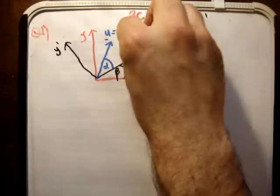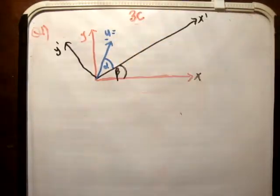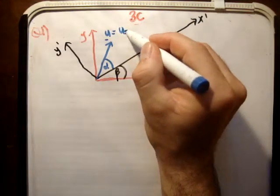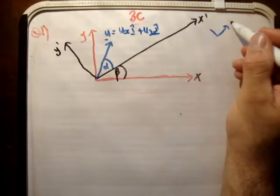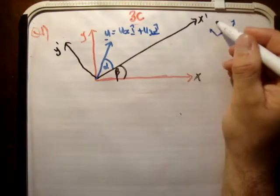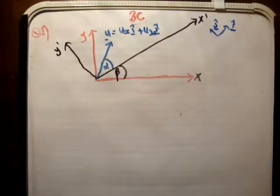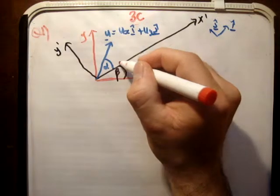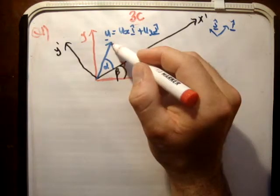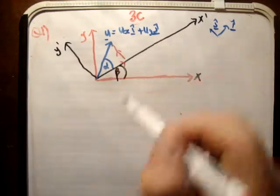So u is equal to u sub x i-hat plus u sub y j-hat. That is definitely the best approach because it tells you exactly which plane you're using. The y prime axis is perpendicular to the x prime axis. We need the two vectors which when added together give u — u sub x and u sub y — parallel to the x prime and y prime axes respectively.